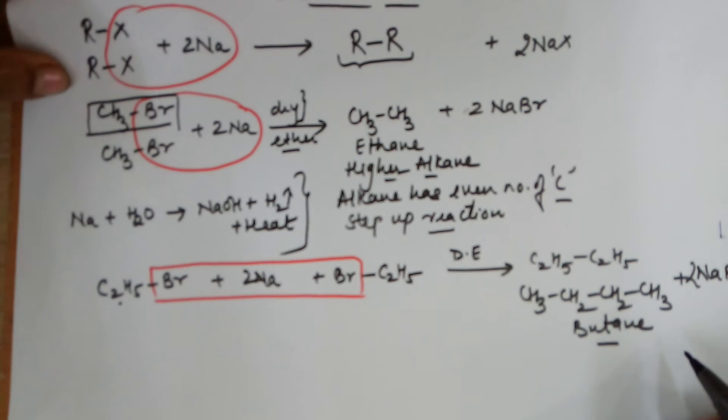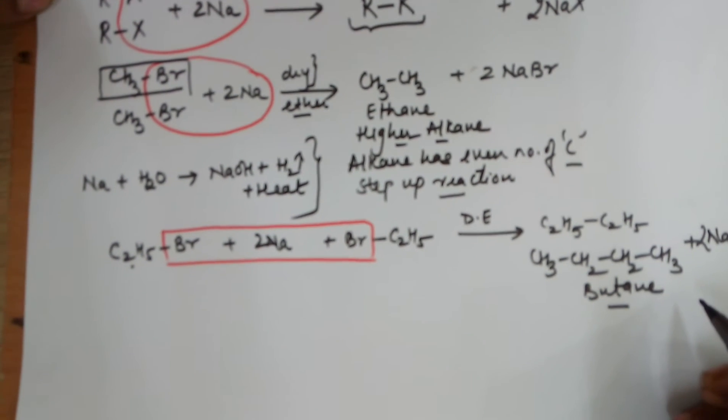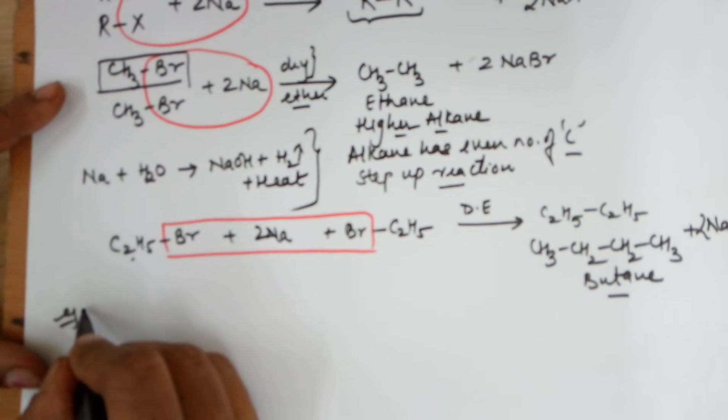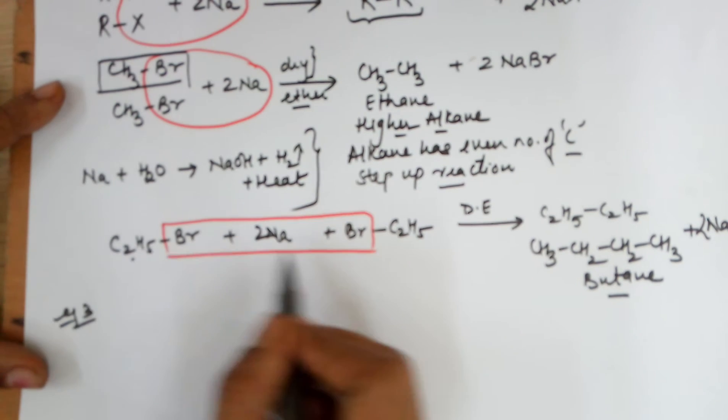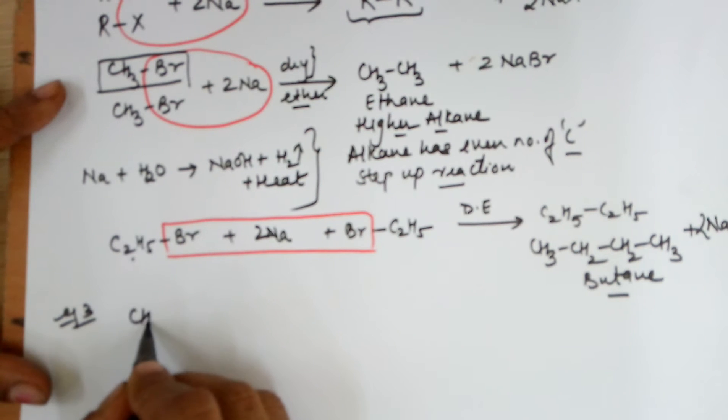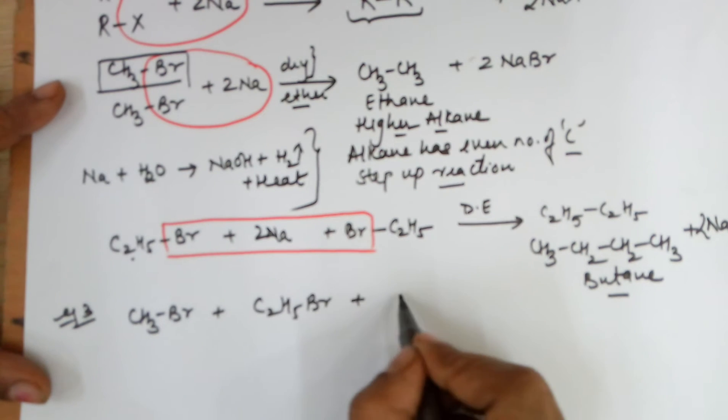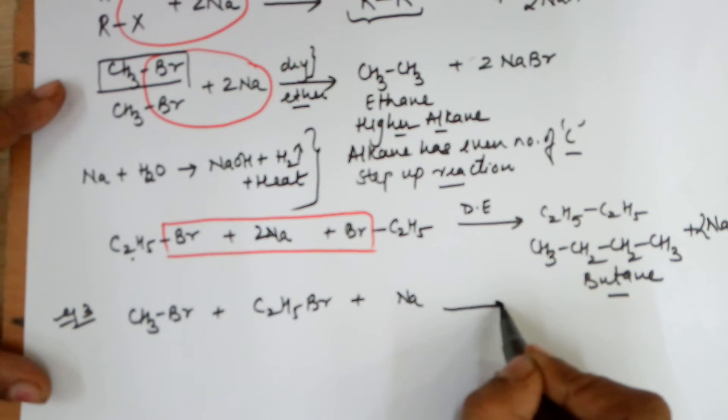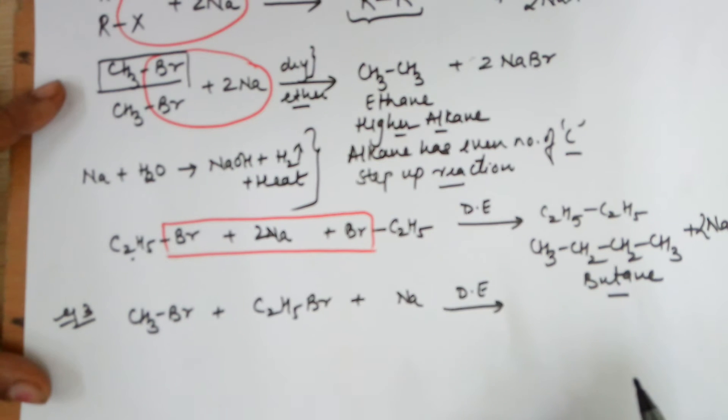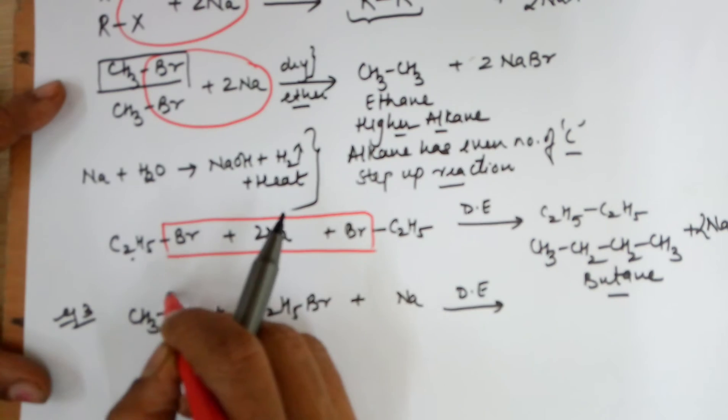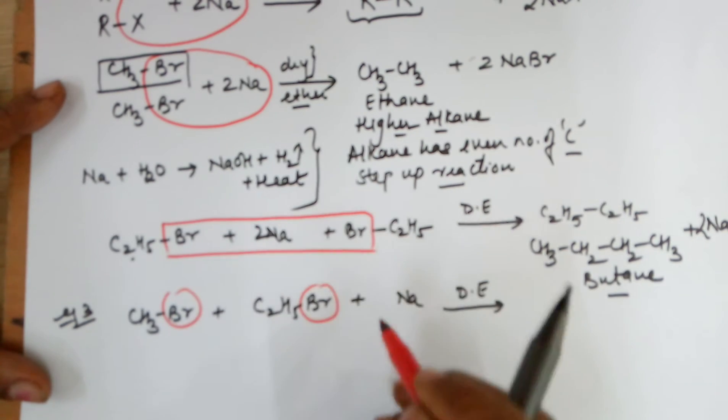Taking up another example under the same category. What do you think would happen if instead of taking both the R groups to be same, I start with a methyl bromide and an ethyl bromide, and I use sodium as the reactive metal again in the presence of dry ether. What you would expect is that again sodium would take away one bromide, the other bromide,